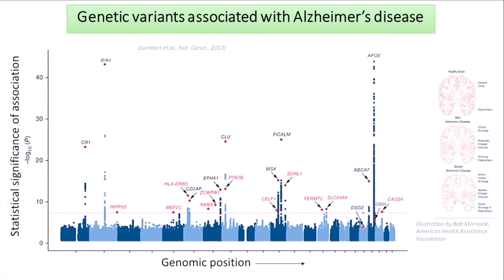This is an example of what a genome-wide association study looks like. On the x-axis, I'm showing you the genome itself — every genomic position, three billion base pairs. On the y-axis is the statistical significance of association, and each point is one of several million genetic variants. The height of the variant tells you how significantly it is associated. For Alzheimer's disease, a neurodegenerative disease, you can see a bunch of genetic variants strongly associated with the disease. People have been doing this for thousands of diseases and finding all these interesting genetic variants.